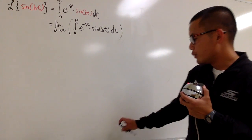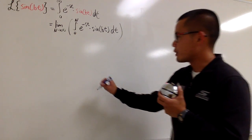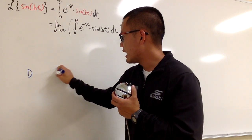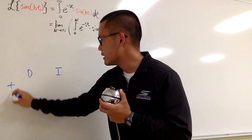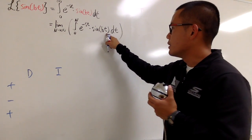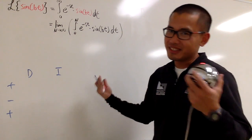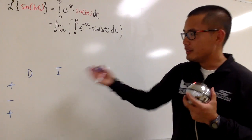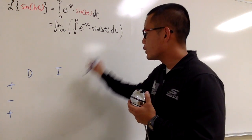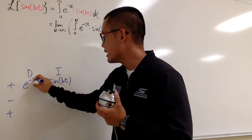We have to use integration by parts, and of course I will show you guys with the DI method. I'll write down the D and the I columns with plus-minus signs on the side. We have e to the negative st and sine of bt. They are both pretty easy to integrate — it doesn't matter. I'm going to be integrating sine bt and differentiating e to the negative st.